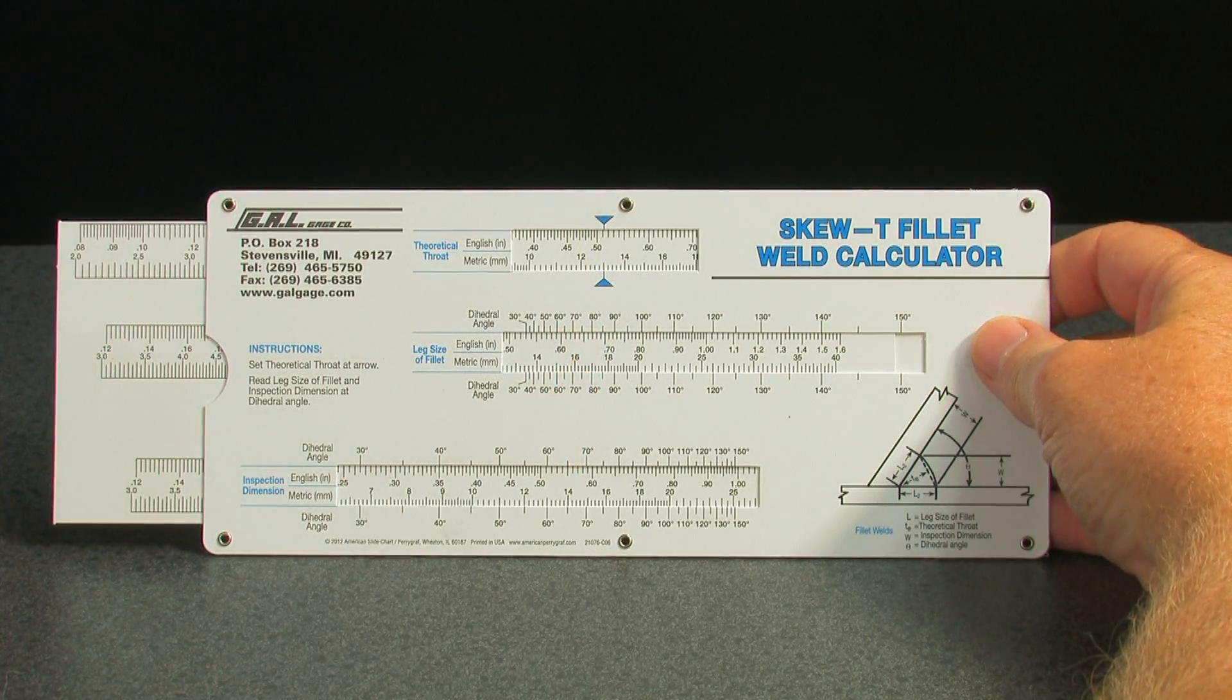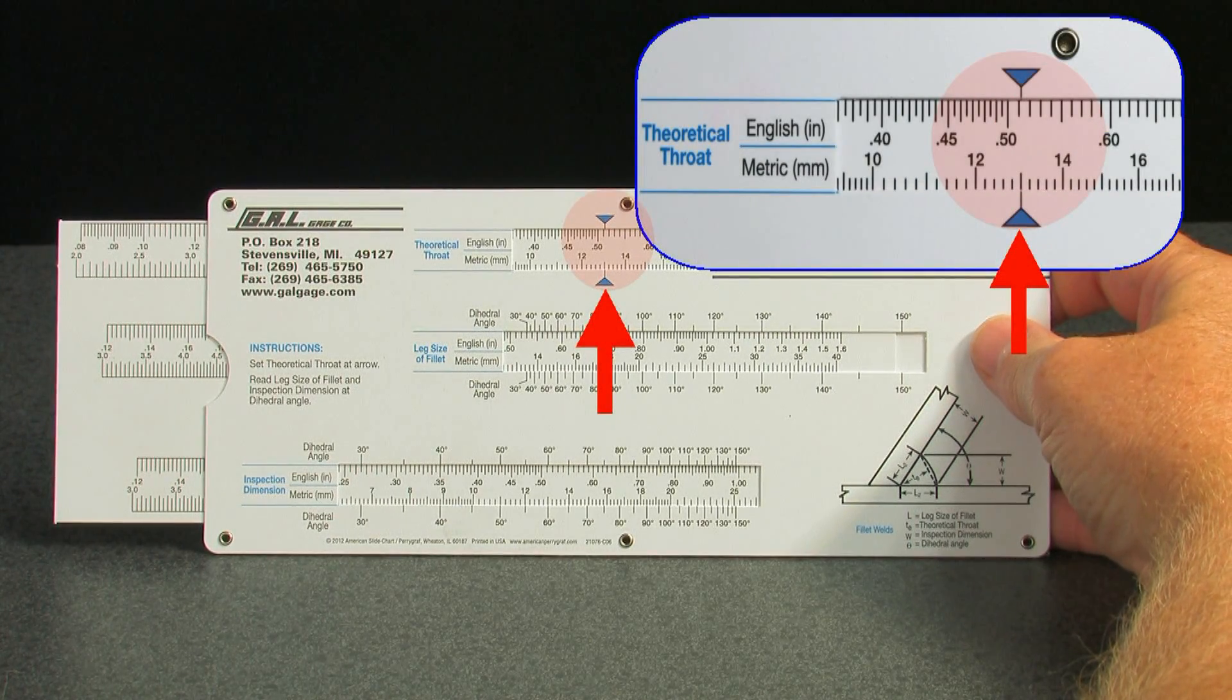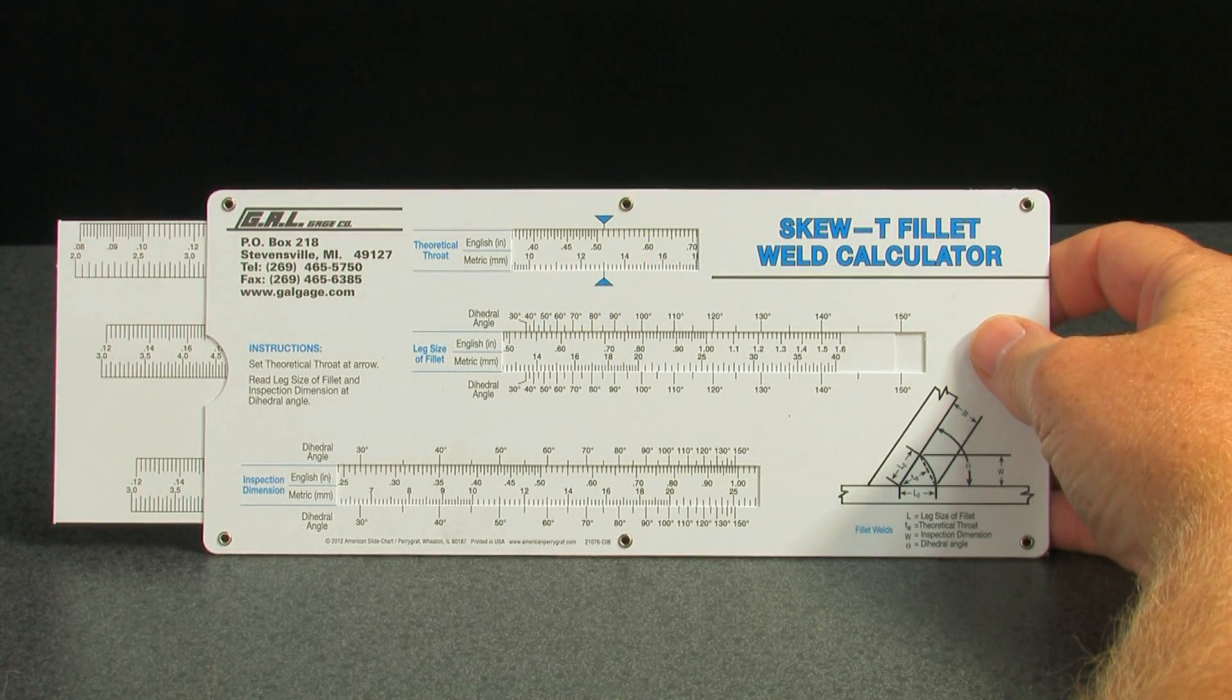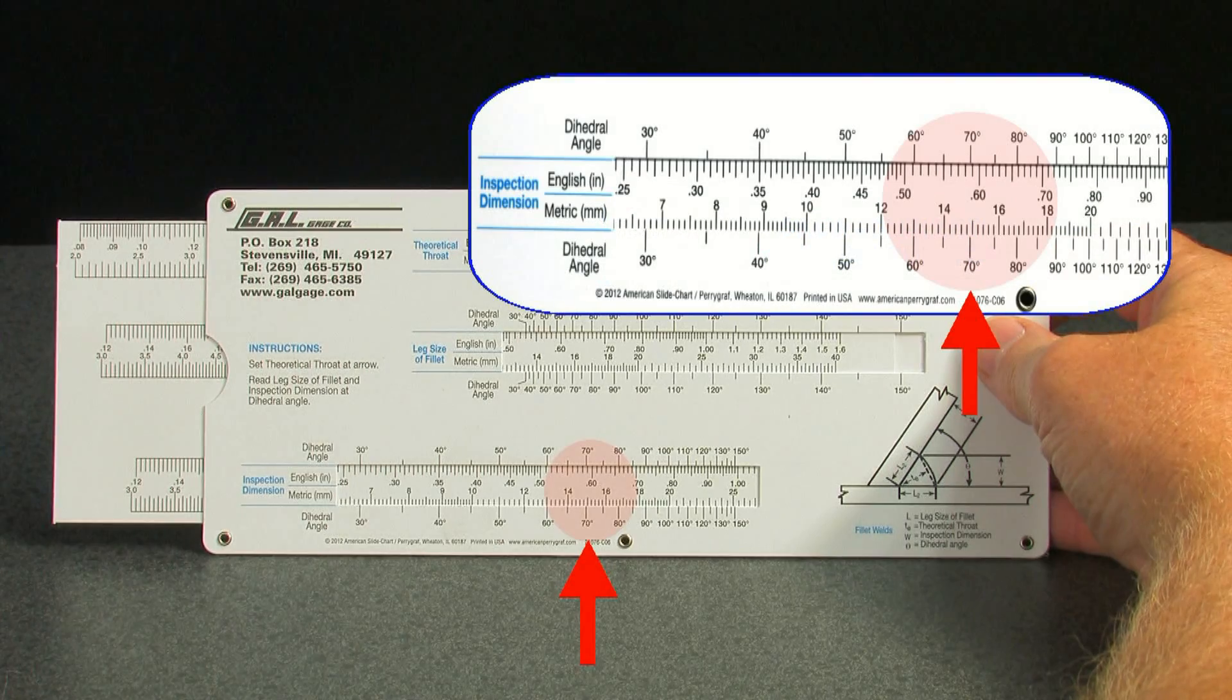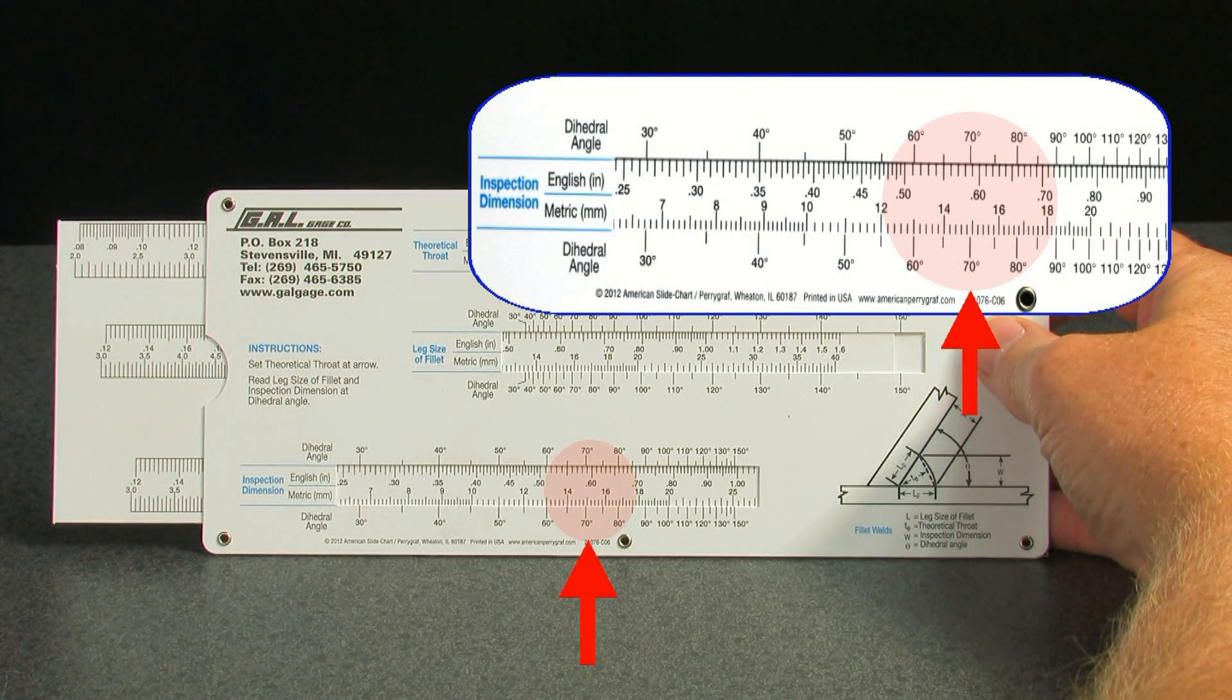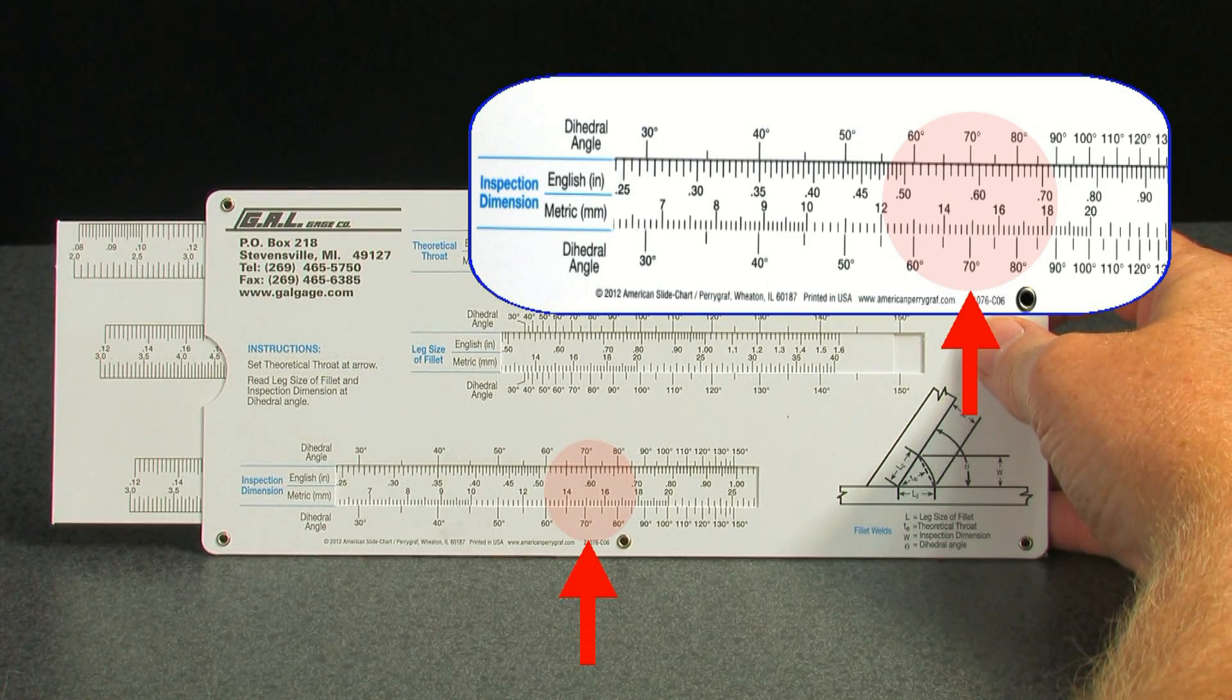The calculator shows the theoretical throat size to be just over 510 thousandths of an inch. Find the 70 degree dihedral angle mark on the inspection dimension scale. The inspection dimension reads just under 590 thousandths.